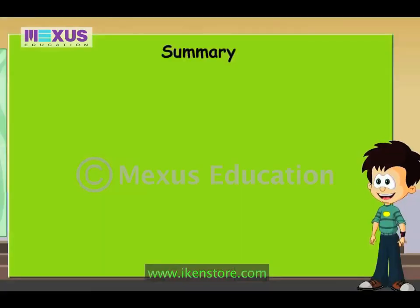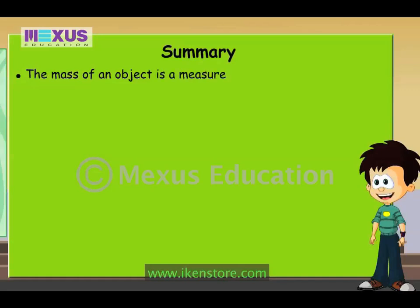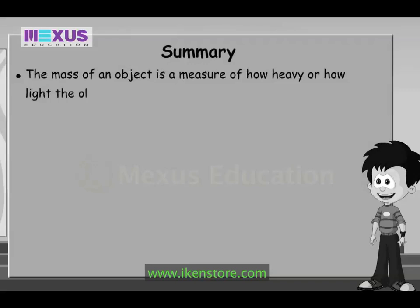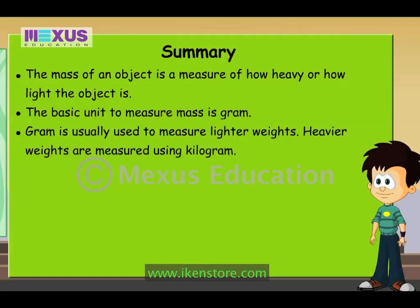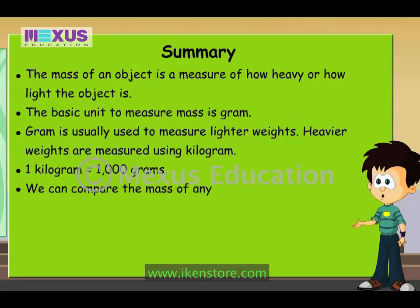Today I realized the importance of mathematics in everyday life. Here's what I learned about mass, or what we commonly refer to as weight: The mass of an object is a measure of how heavy or how light the object is. The basic unit to measure mass is gram. Gram is usually used to measure lighter weights. Heavier weights are measured using kilogram. 1 kilogram is equal to 1,000 grams. We can compare the mass of any two objects and judge how heavy or how light they are.